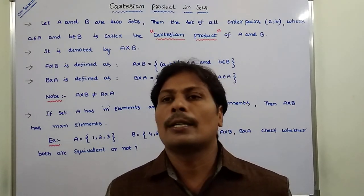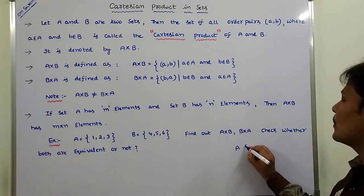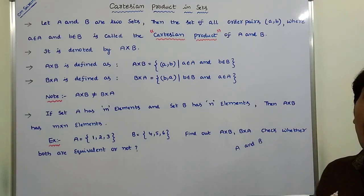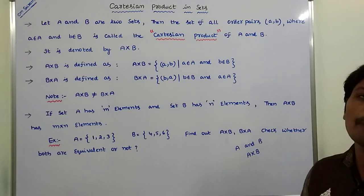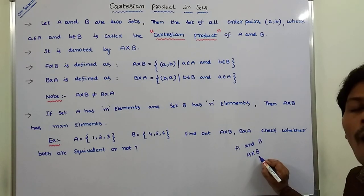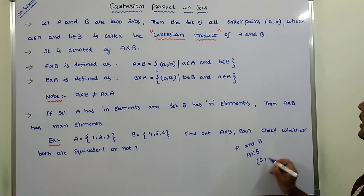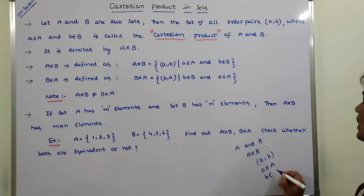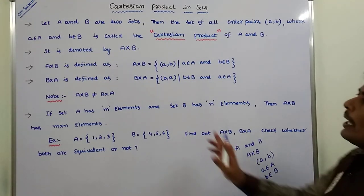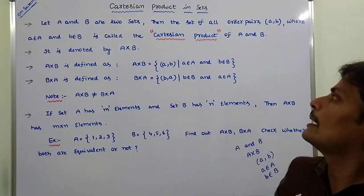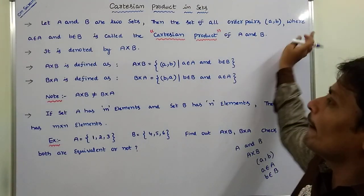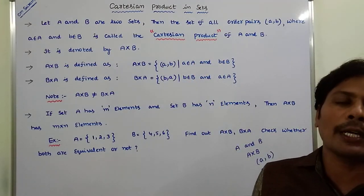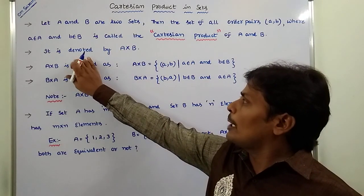What is Cartesian product? Suppose A and B are two sets, then the Cartesian product of two sets A and B is denoted by A cross B. A cross B is nothing but the set of all ordered pairs in the form (a, b) where 'a' belongs to the first set A and 'b' belongs to the second set B. The set of all such ordered pairs is called the Cartesian product of A and B, denoted by A cross B.